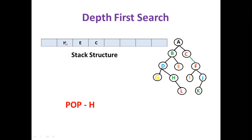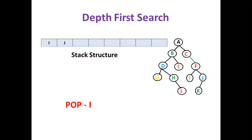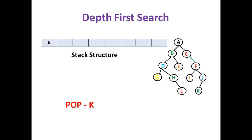If G is not the goal, pop H next. Find H's child L, push L to the top. Pop L — if L is the goal node, stop; otherwise pop E. Since L and E have no children, nothing is added to the stack. If E is not the goal, pop C and explore its child F. Push F, then pop F and find its children I and J. Pop I — if I is the goal, stop; otherwise pop J, push K, and pop K.